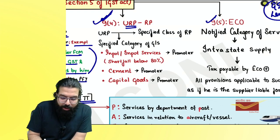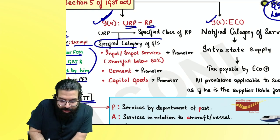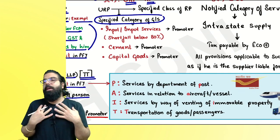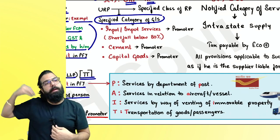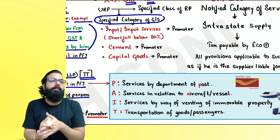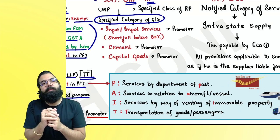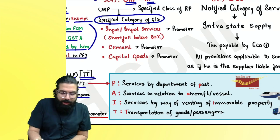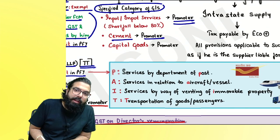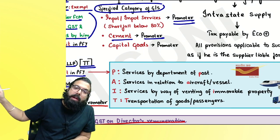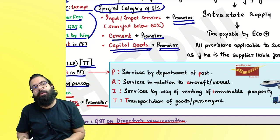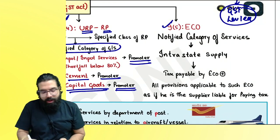Section 9(4) says that when an unregistered person supplies to a registered person in a notified/specified category of goods and services, RCM will apply. For example, a builder or promoter must buy at least 80% of inputs and input services from registered persons. If only 70% is bought from registered persons, the 10% differential — the promoter must pay GST under RCM. Cement bought by a builder from an unregistered person, and capital goods bought by a promoter from an unregistered person, are also covered under RCM.